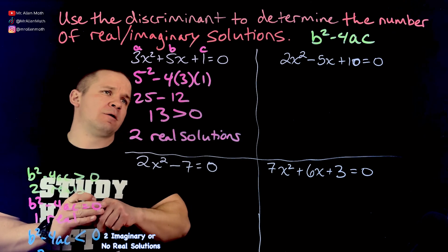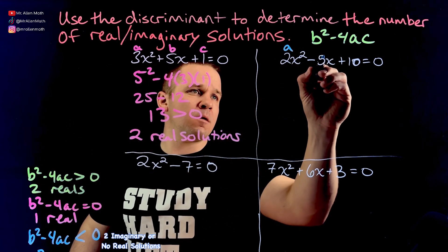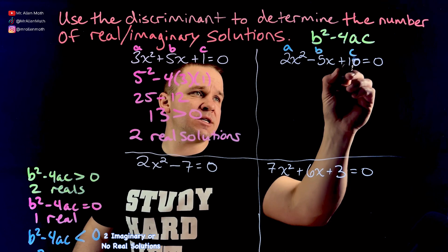Next one here. Let's go with, let's see here. We got our A is 2. Our B is negative 5. And our C is 10.